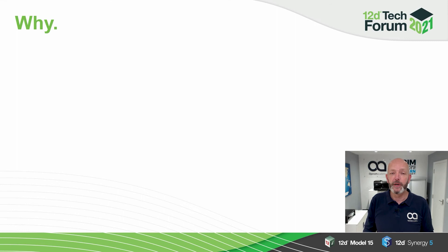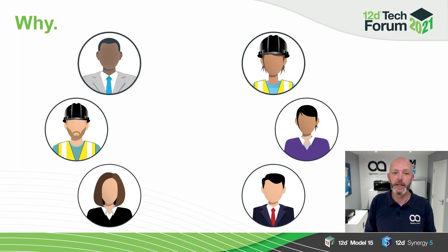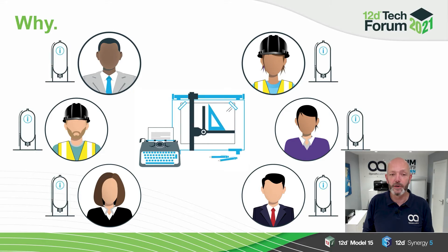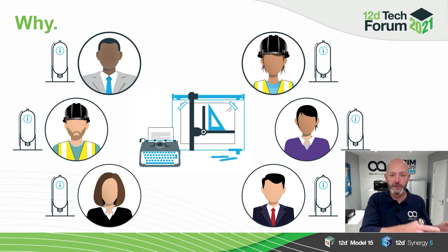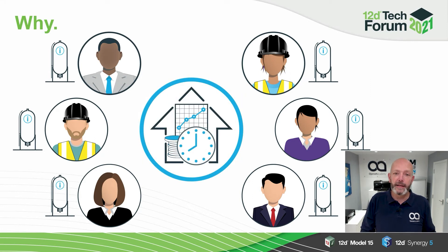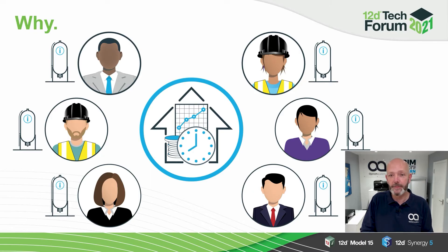Why do we even need information management standards? We've been producing information for years — before computers were even invented, we were producing information just fine. But the research shows that the problem is we've been producing it in silos: architects over here, engineers over there, surveyors, construction teams, and so on. This is how we're actually taught at university — very siloed in terms of profession and discipline. The impact is that we're introducing wasteful activities and producing information that is invariably inaccurate, ambiguous, and incomplete.